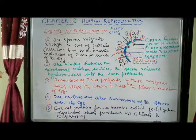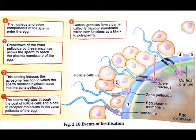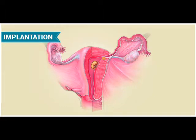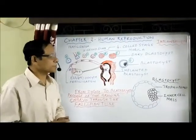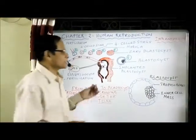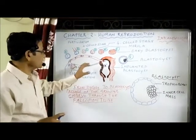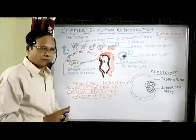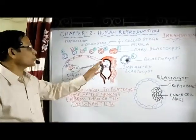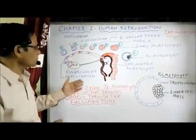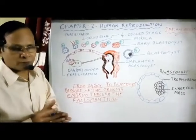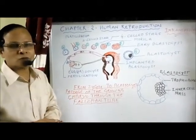After fertilization, the process of implantation occurs. The diagram shows the passage of the growing embryo through the fallopian tube, from zygote to blastocyst. After the zygote is formed, it undergoes repeated mitotic divisions called cleavage.